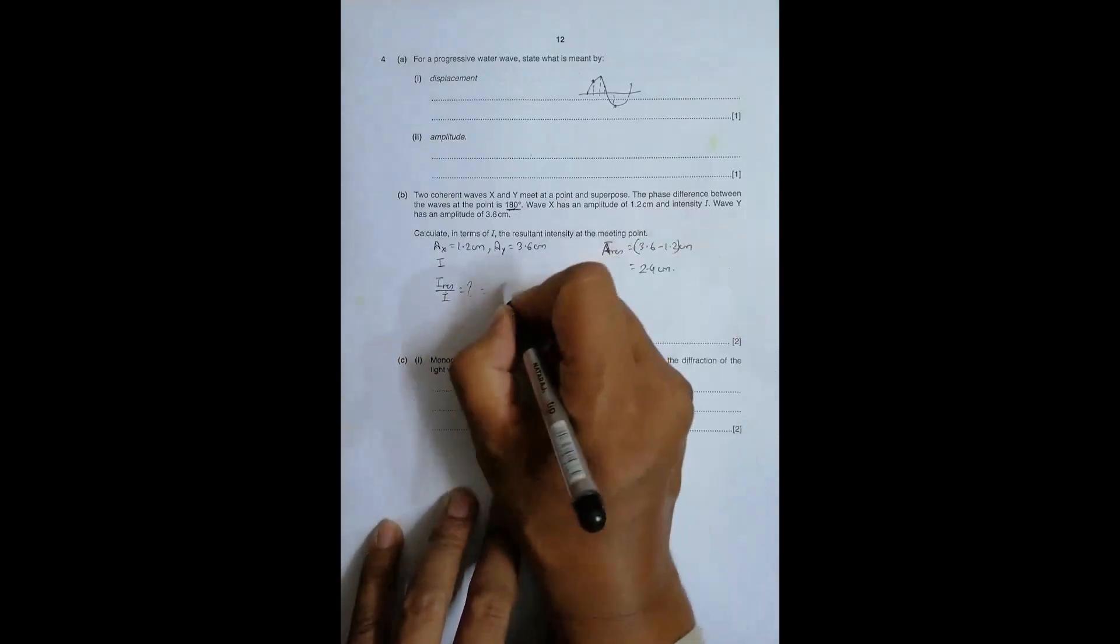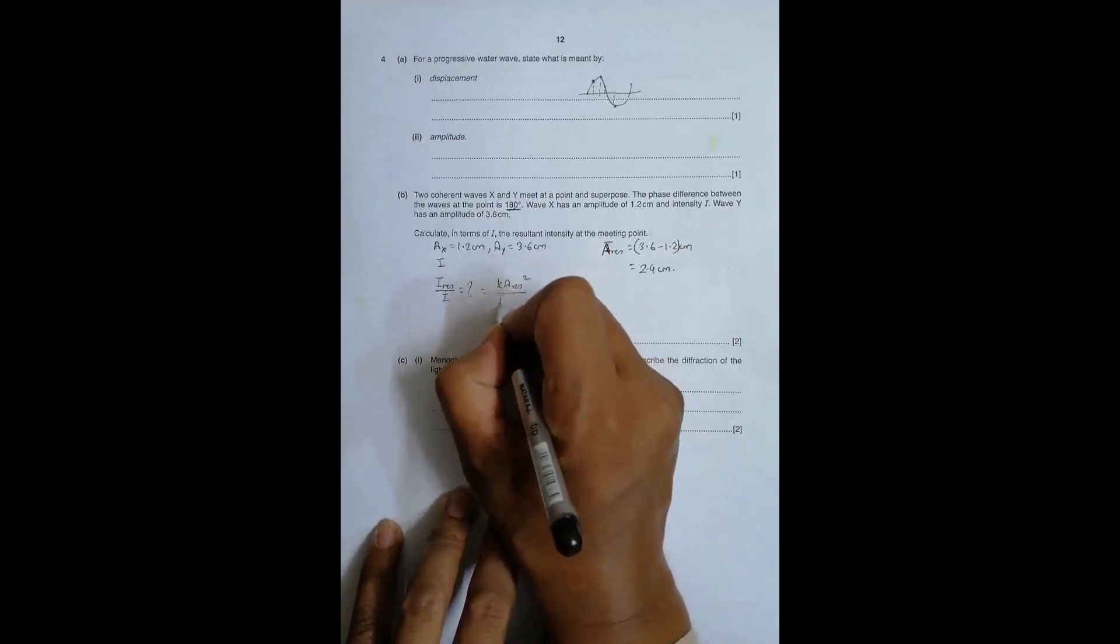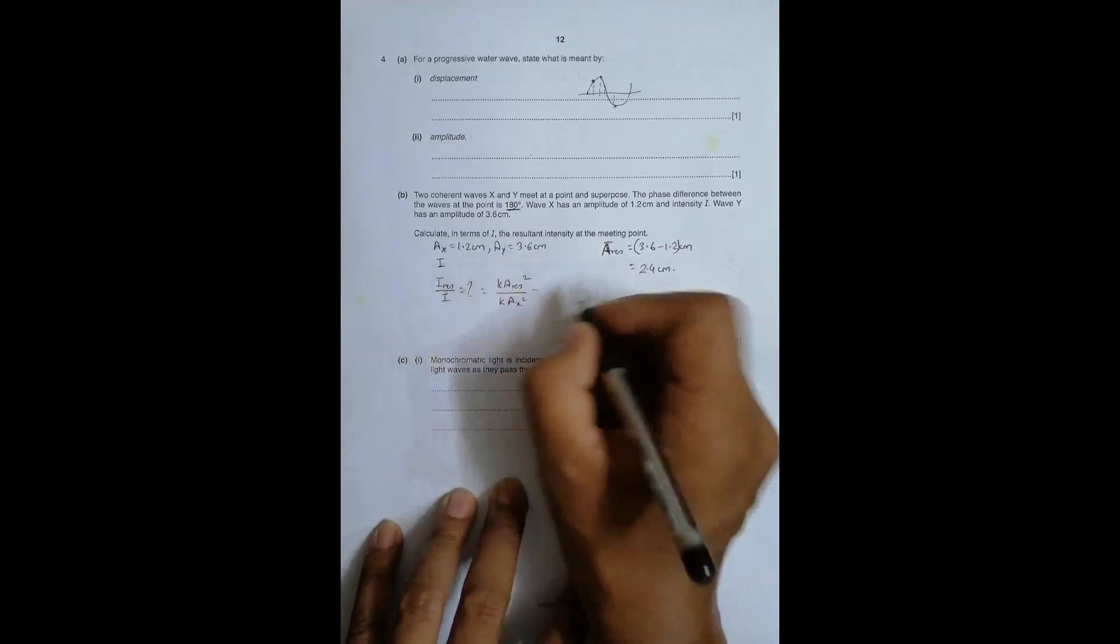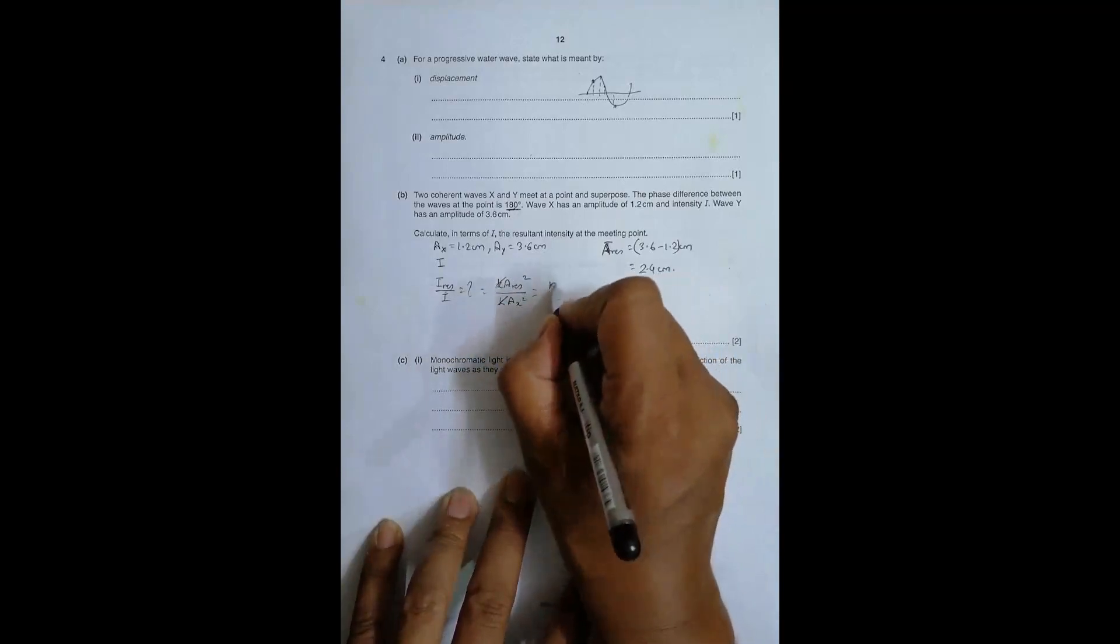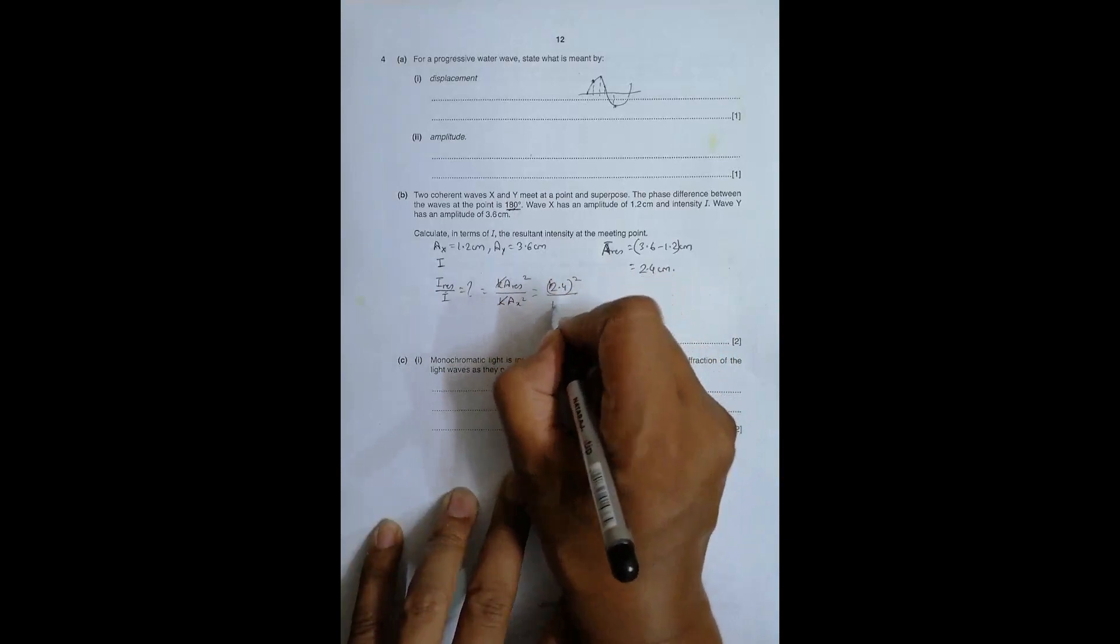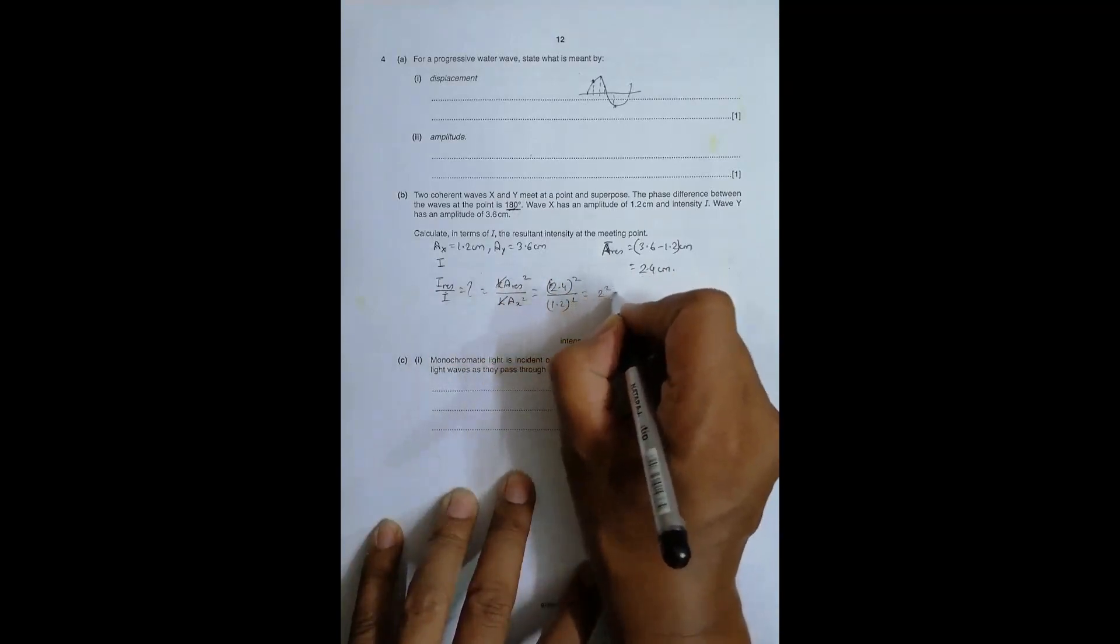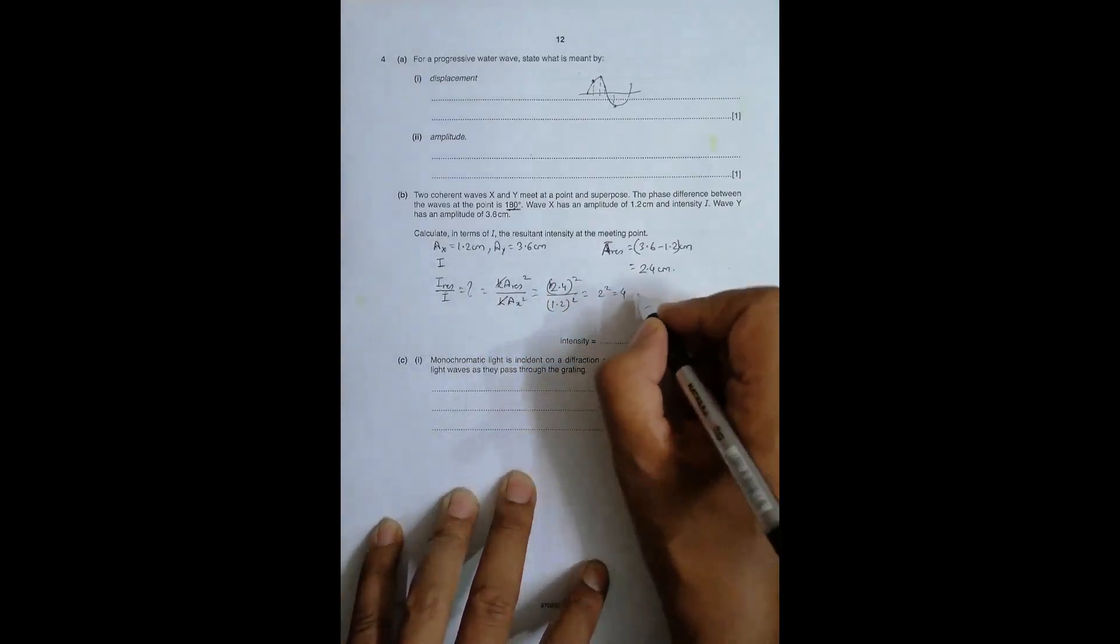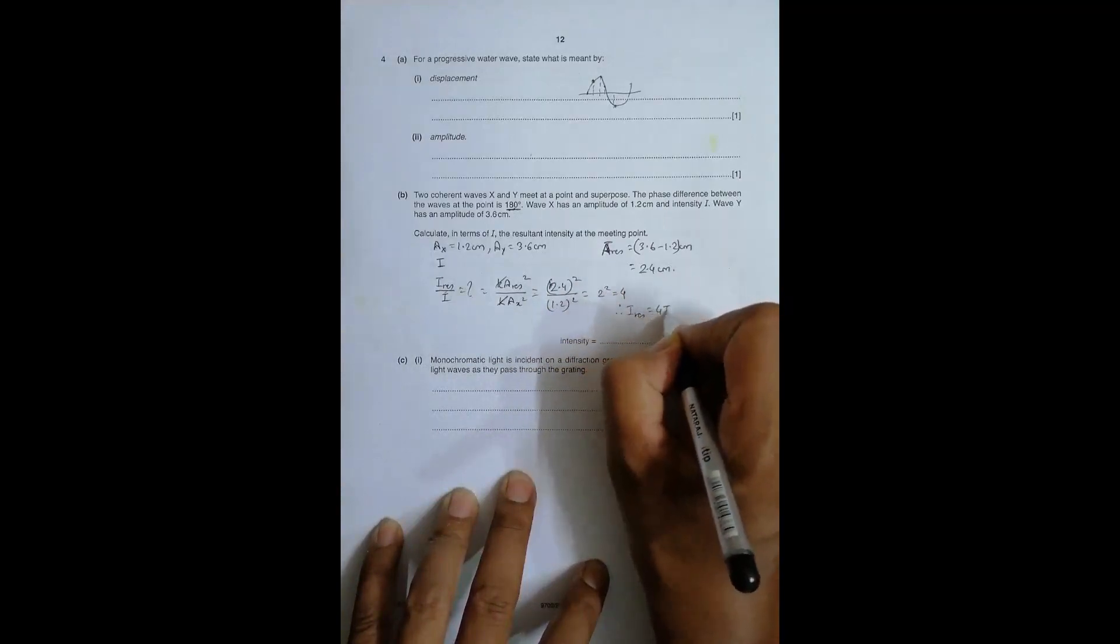I equals K times Ax squared, so I_resultant over I equals (2.4)^2 divided by (1.2)^2, which equals 2 squared equals 4. So this gives us I_resultant equals 4I, so it's equal to 4 times I.